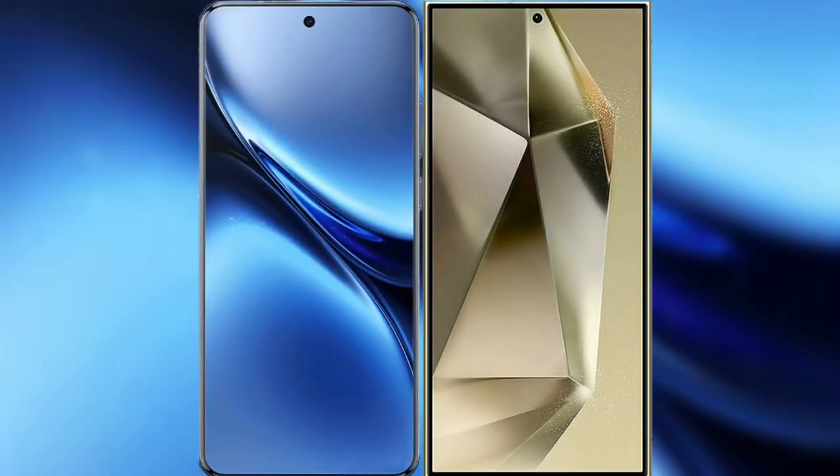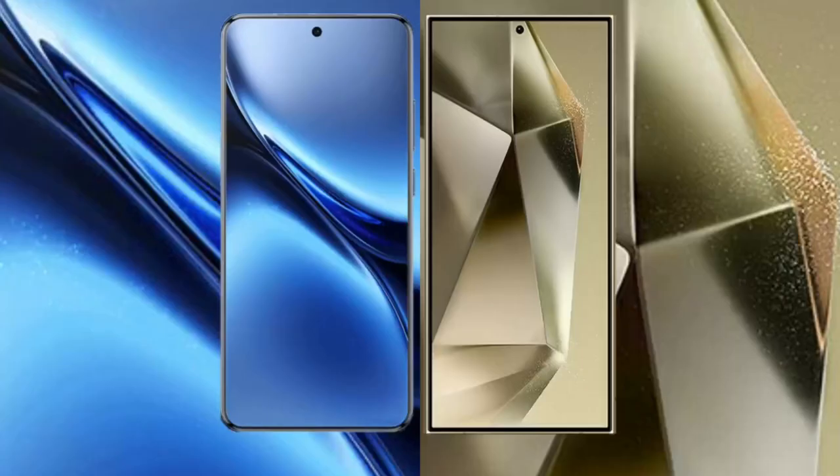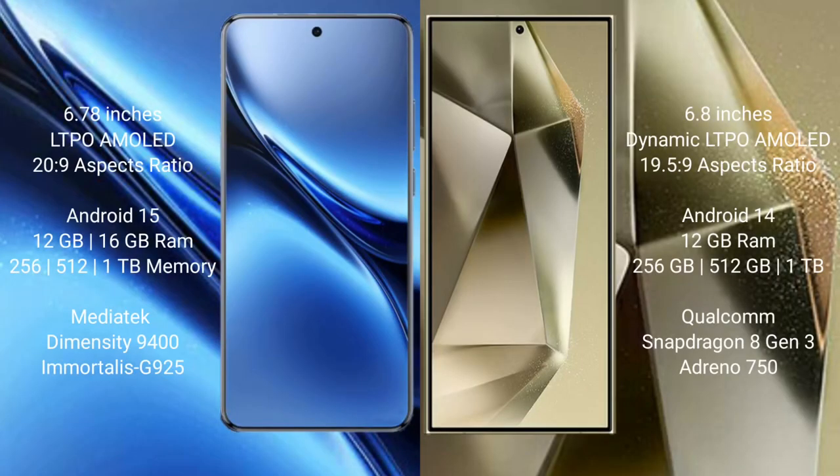I will compare the new Vivo X200 Pro with Samsung Galaxy S24 Ultra. Vivo X200 Pro features a 6.78-inch LTPO AMOLED display with Dimensity 9400 processor. Samsung Galaxy S24 Ultra features a 6.8-inch Dynamic AMOLED display with Snapdragon 8 Gen 3 processor.